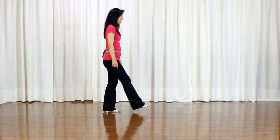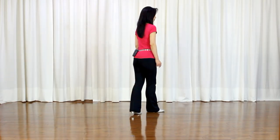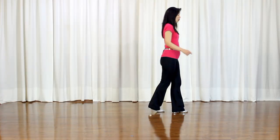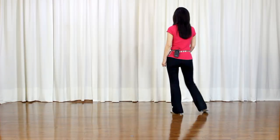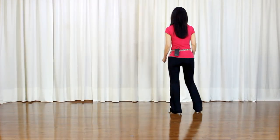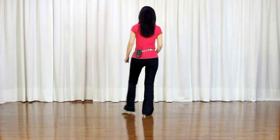Section 2 has 10 counts. Step, lock, step, prissy walk. Left, hold, right, hold, mambo. Quarter turn, chassé, cross, recover, side, recover, behind, side, cross.